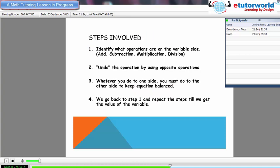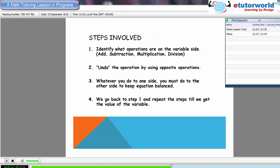So you can see the screen now, steps involved? Yeah, I can see that. Okay, the first step says identify what operations are on the variable side. For example, 2x minus 5 equals 11. So this is my equation that is given to me. Now can you identify these operations, what are there on the variable side?